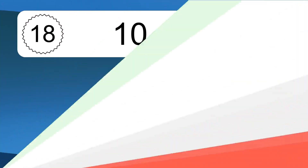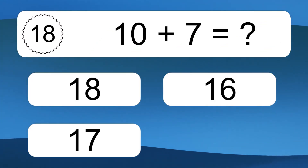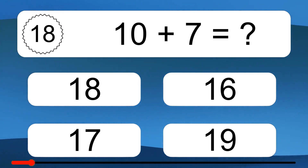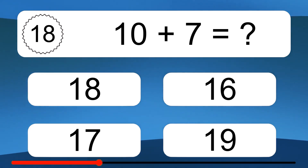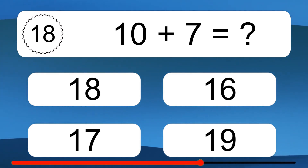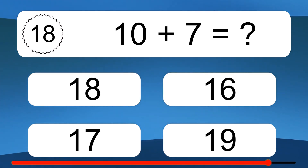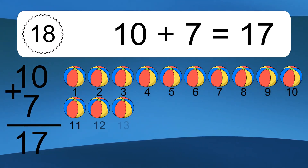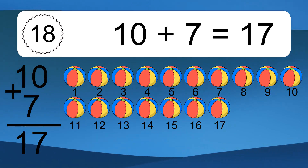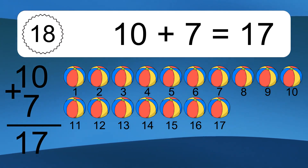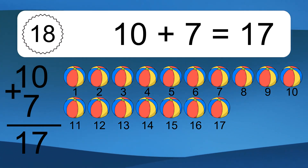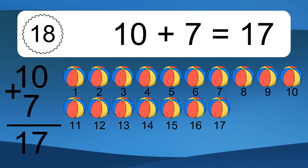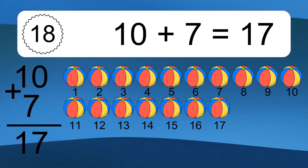10 plus 7 equals what? Let's count it. 1, 2, 3, 4, 5, 6, 7, 8, 9, 10, 11, 12, 13, 14, 15, 16, 17.